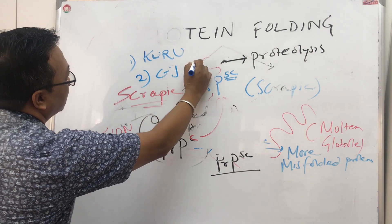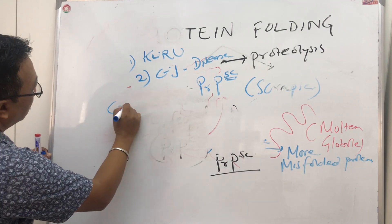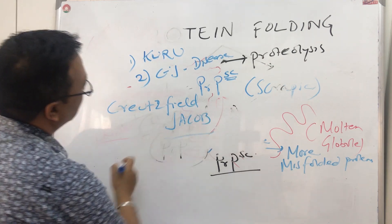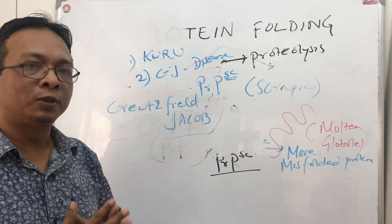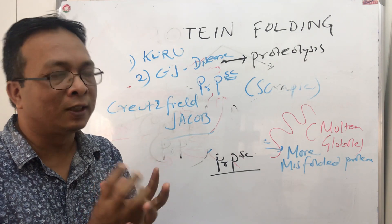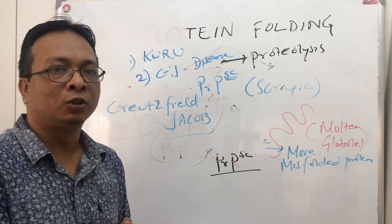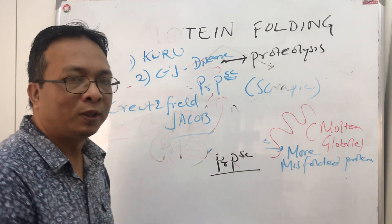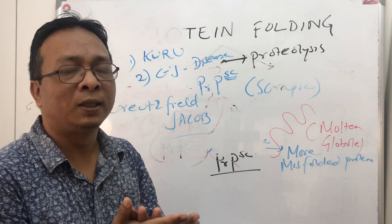The most recognized prion disease today is Creutzfeldt-Jakob disease, or CJD. In CJD, there is progressive dementia, memory problems, and motor issues — the pyramidal tract is affected and extrapyramidal signs appear. The location where misfolded proteins collect determines the symptoms: if collected in the motor area, motor functions are lost; if in the sensory area, sensory functions are lost.